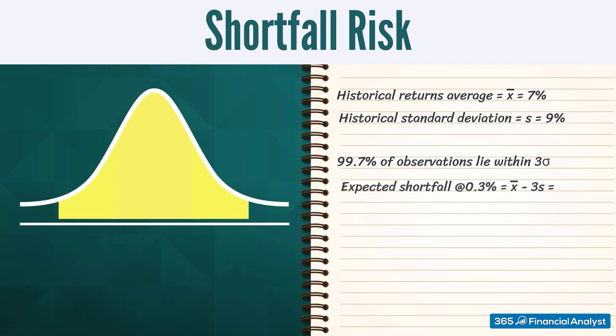An expected shortfall of 0.3% would be equal to the expected mean minus 3 times sigma. This gives us 7% minus 3 times 9%. The expected shortfall is minus 20%.